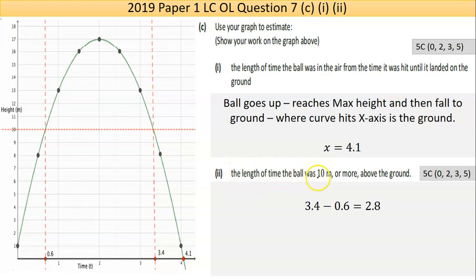Part two then says, the length of time the ball was 10 metres or more above the ground. If I find where 10 metres is on the height axis, bring a line across. Well, it was above 10 from here all the way around to here. So how long was that? I'm estimating here was from 0.6 of a second up as far as 3.4 seconds. So take that away. 3.4 take away 0.6, I got 2.8.